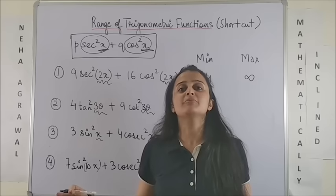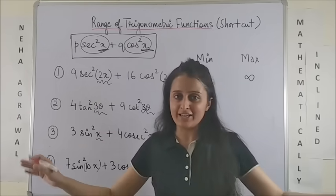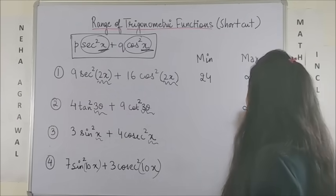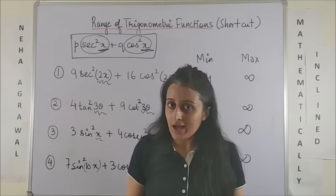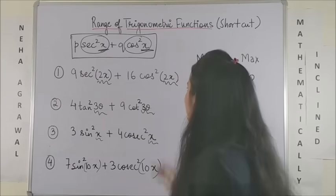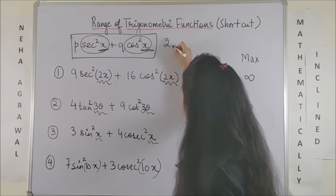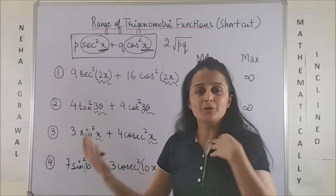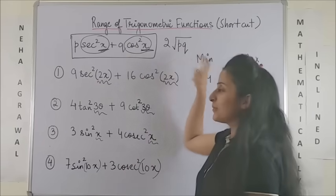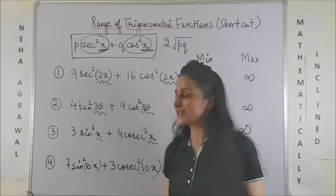Then, the maximum value is always infinity. Yes, so for all these questions, it is simply infinity. And the minimum value is going to be simply twice of under root P into Q. Now, P and Q could be anywhere. It is a simple product. That's all you have to do.